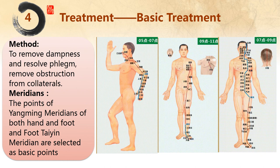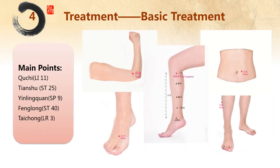The method of basic treatment is to remove damps and resolve phlegm, and remove obstructions from the collaterals. The points of Yang Ming meridians of both hand and foot and the foot Taiyin meridian are selected as basic points. The main points include Quchi, Tianshu, Yin Lingquan, Fenglong, and Taichong. The locations of these acupoints have been introduced in previous courses and will not be detailed in this lesson.